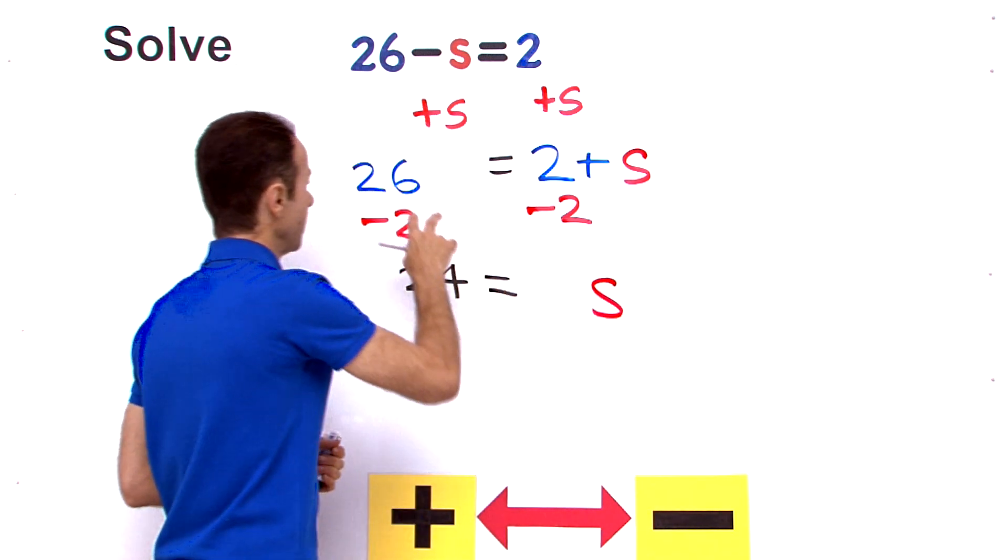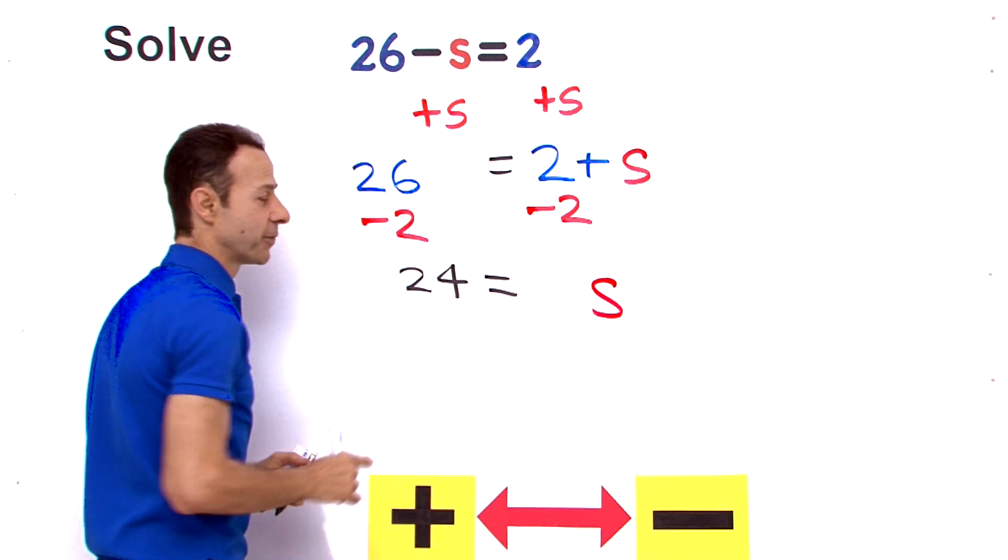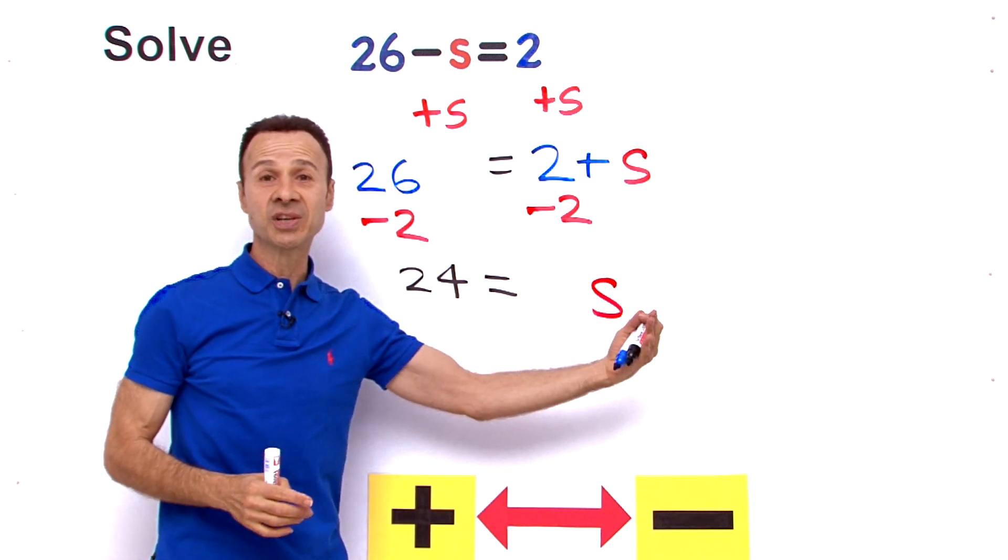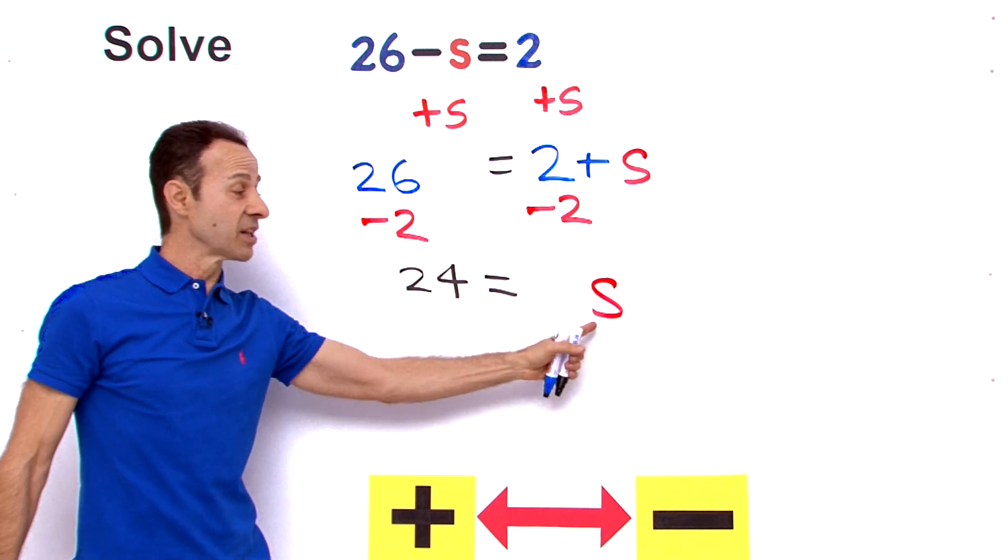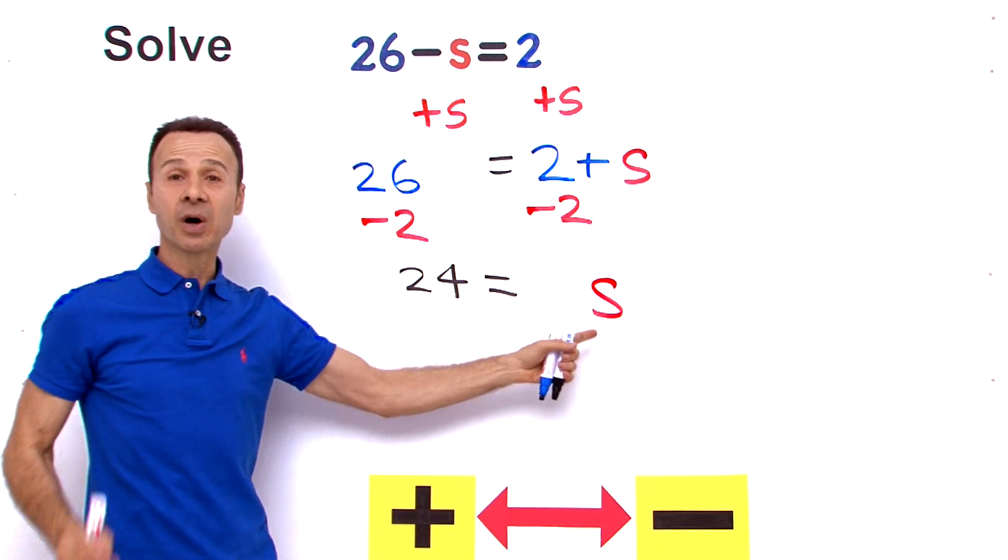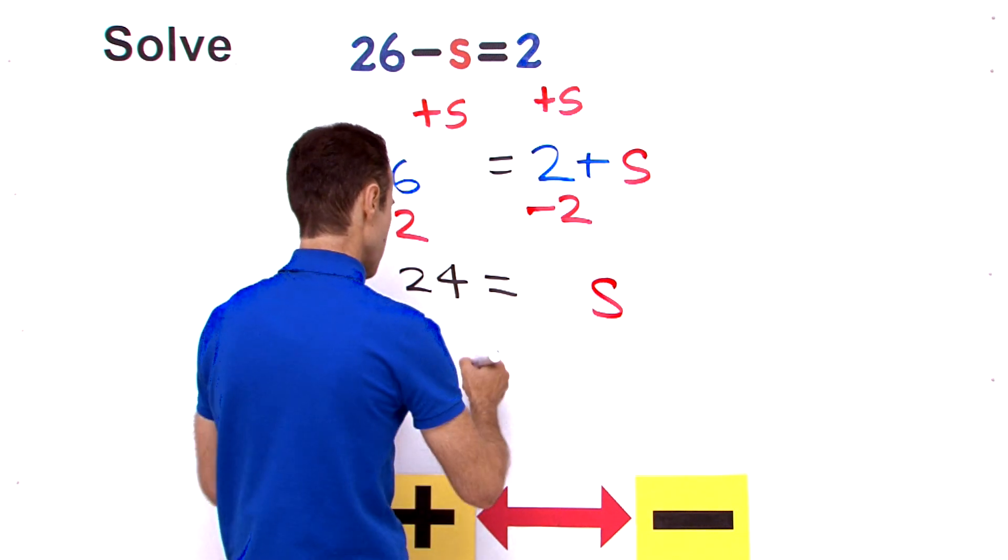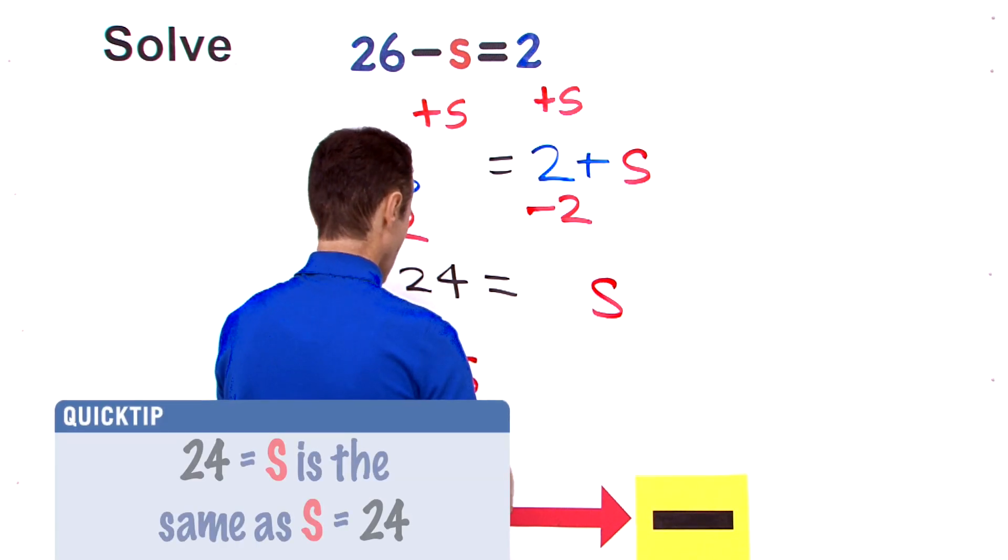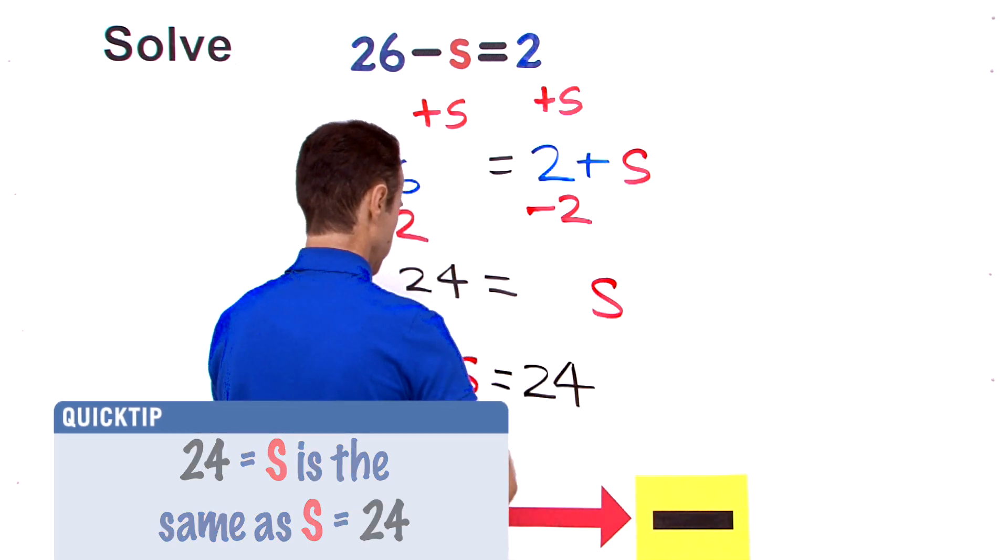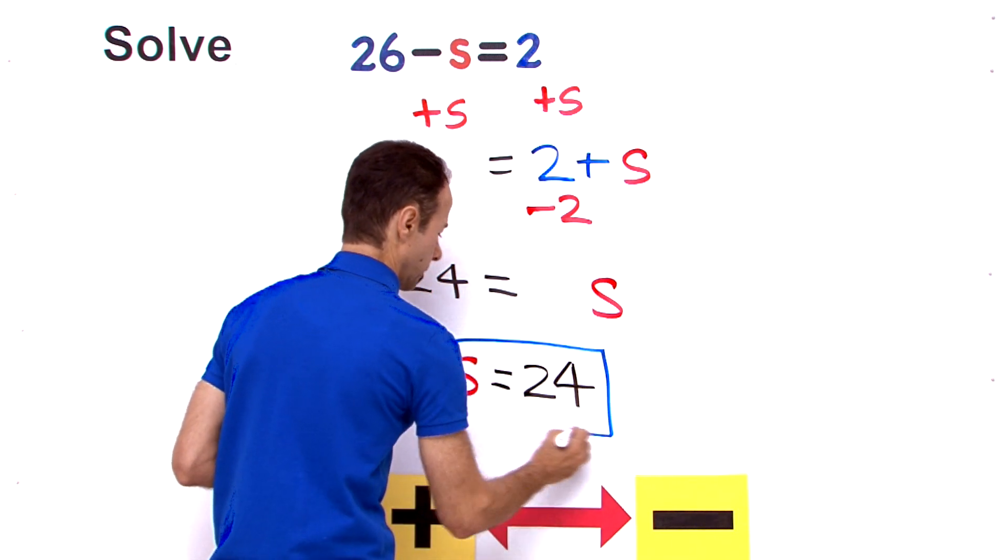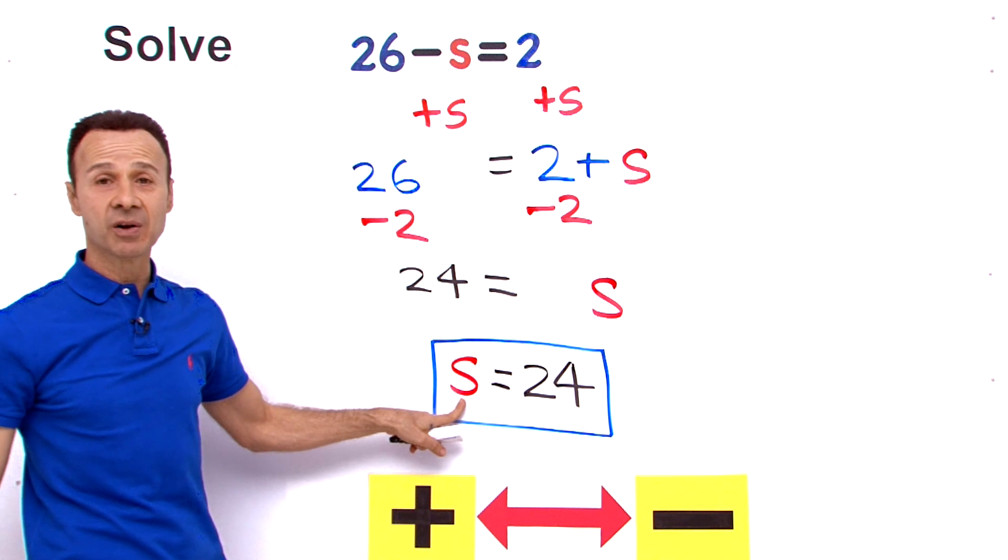There's the s. 26 minus 2 is 24. So s equals 24. Does it matter that the s is on this side and the 24 is on this side? No, because it's still an equation and it's still all by itself. But if you want you can just swap them because the equation is the same. S equals 24. So now it's solved.